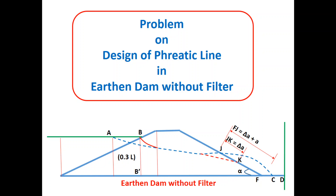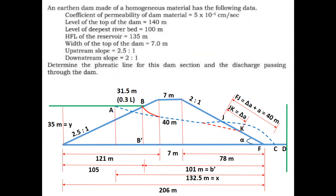To be adjusted by considering point k in the form of delta a, as can be seen in the theoretical data. The starting point also needs to be shifted to the intersection with the upstream surface. Such details can be seen in the theory part. Now we can see the real problem on design of such phreatic line without filter — see the problem statement here.